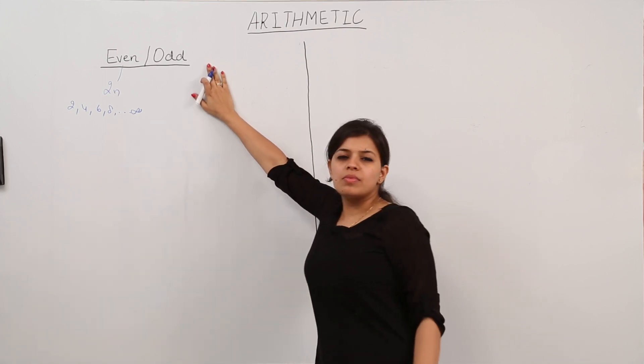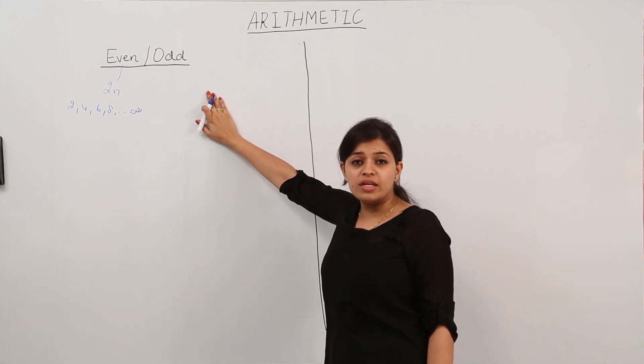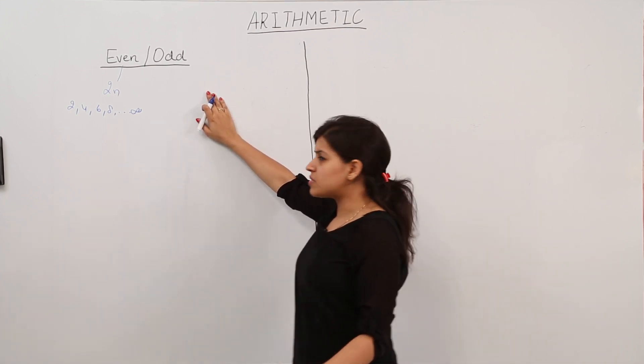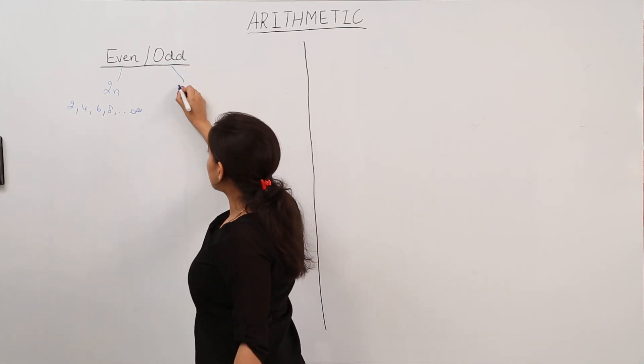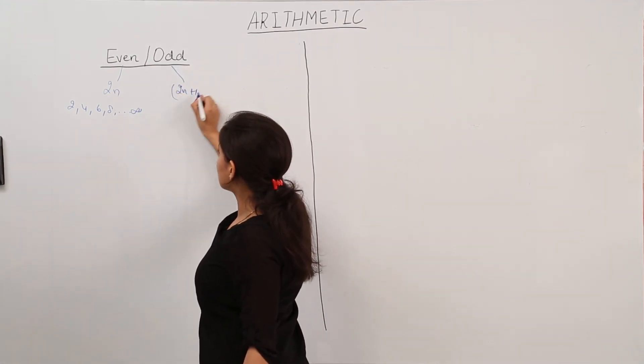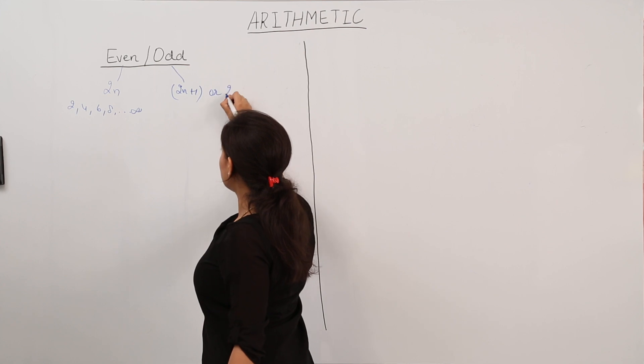Odd numbers. Those numbers which when divided by 2 leave a remainder 1 are known as odd numbers. The general form of odd numbers is 2n plus 1 or 2n minus 1.